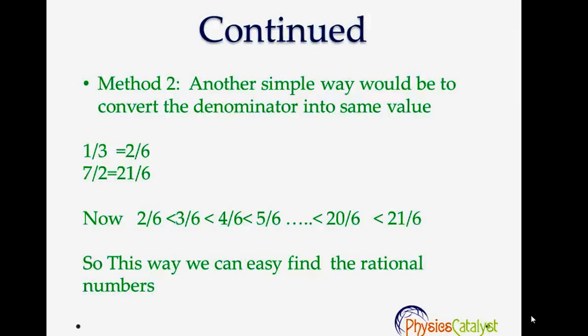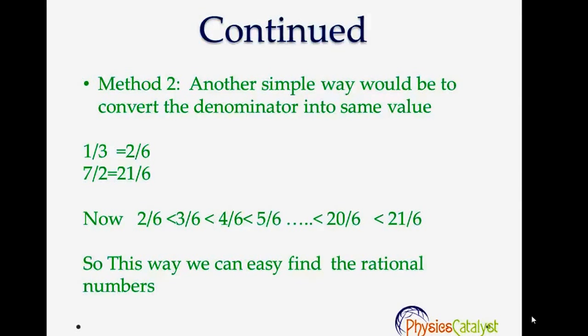2/6 is less than 3/6, which is less than 4/6, which is less than 5/6, and similarly they are less than 20/6 and 21/6. So this way we can easily find the rational numbers.